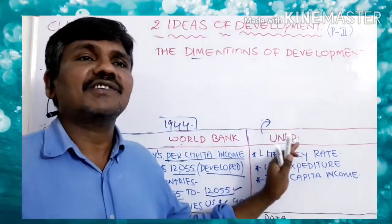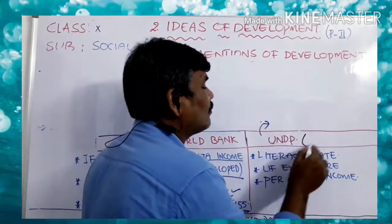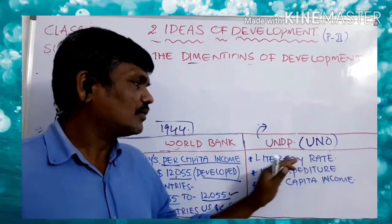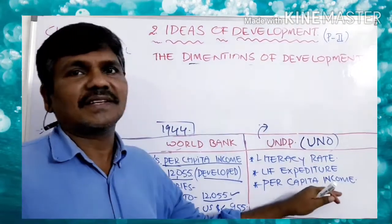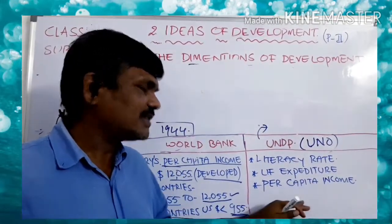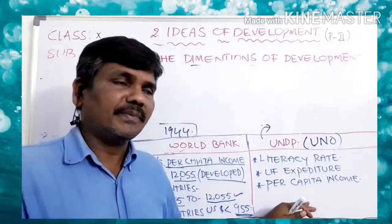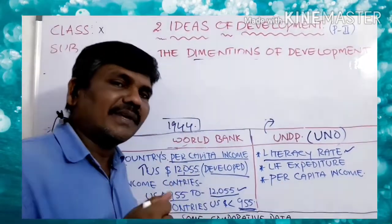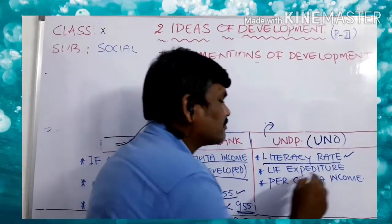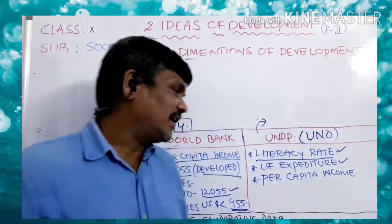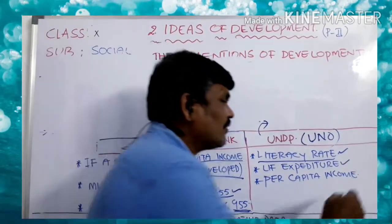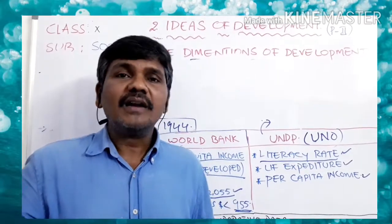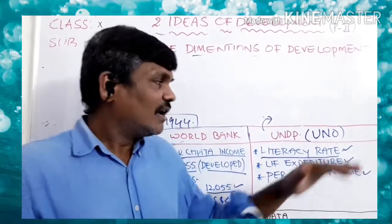UNDP — United Nations Development Programme — is a UNO organization. UNO prepared this program to measure whether a country is developed, undeveloped, or developing. They focus on three things: literacy rate, life span, and per capita income. Using these three measurements, they determine a country's development status.